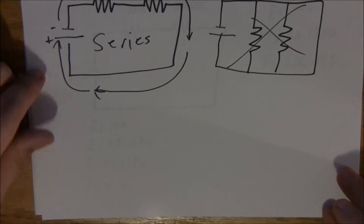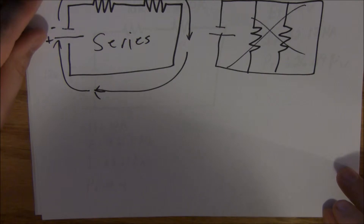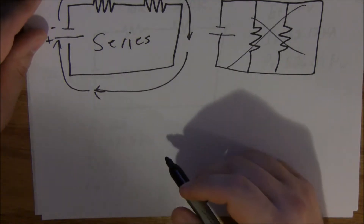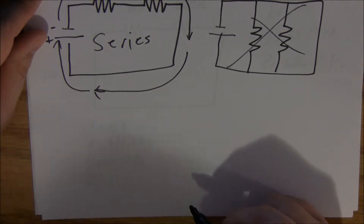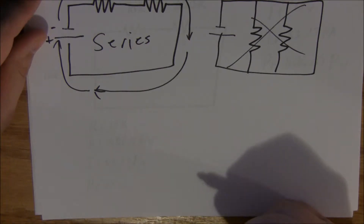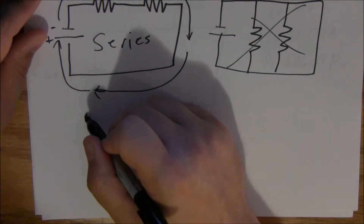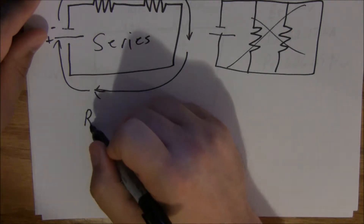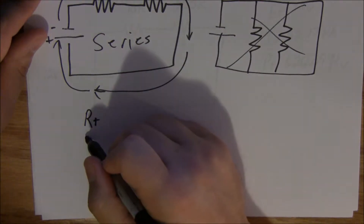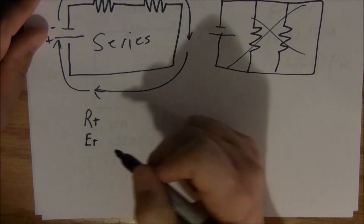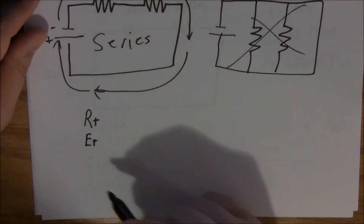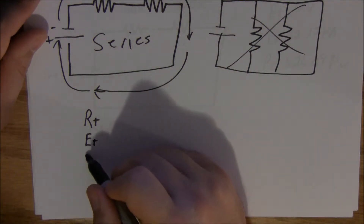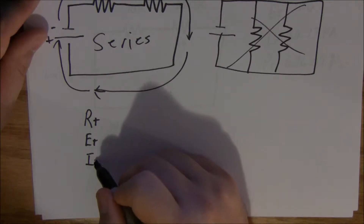There are some basic rules for the series circuit — pretty down and dirty and easy. First of all you need to find out your totals. You need to find out your total resistance, which is RT. You need to find out your total voltage, which is ET. You need to find out your total amperage, IT.